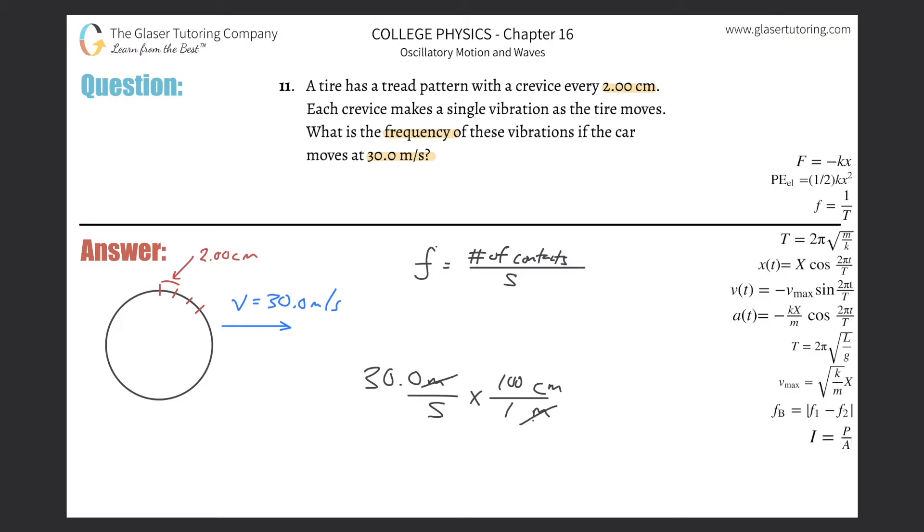So now what this tells me is that 30 times 100, which is 3,000, I have 3,000 centimeters that's moving around this tire every second. So basically, if 3,000 centimeters is traveling every second and these things are spaced every two centimeters...